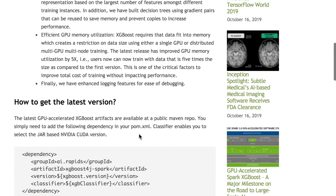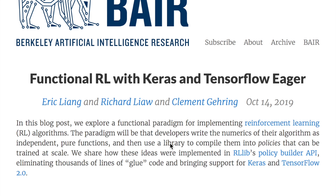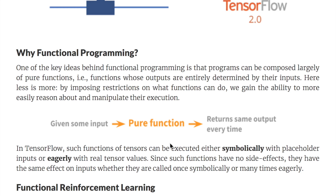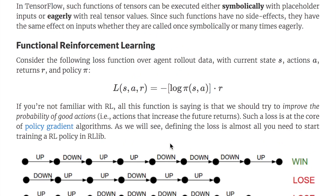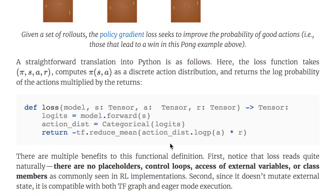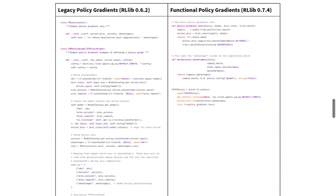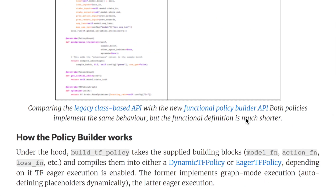Berkeley's AI research blog has posted an update to the RLib reinforcement learning library's Policy Builder API, making it a functional reinforcement learning library that can be compiled into Keras and TensorFlow Eager. Functional programming means a function always returns the same output for the same input — and this idea of functional reinforcement learning separates out the policy, the loss, and the actions, cleaning up the code significantly. You can see in their article the difference between the legacy policy gradients and the new functional policy gradients — a nice compression in lines of code, and an interesting development that may make reinforcement learning more accessible.